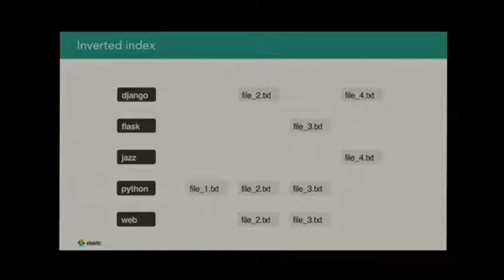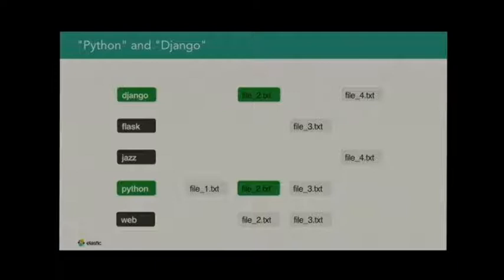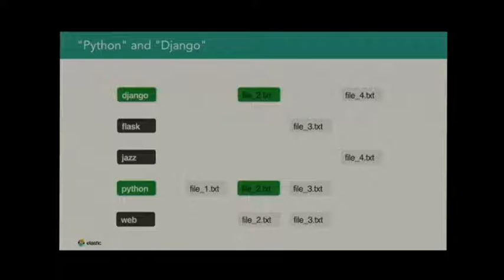The theory is this: you have a list of words on the left side that are sorted, and for each of those words you have a sorted list of documents, files, or pages that actually contain that word. When you do a search — say you're looking for Django and Python — all you have to do is locate those two words in the sorted dictionary, get back two sorted lists, and output anything that appears in both.